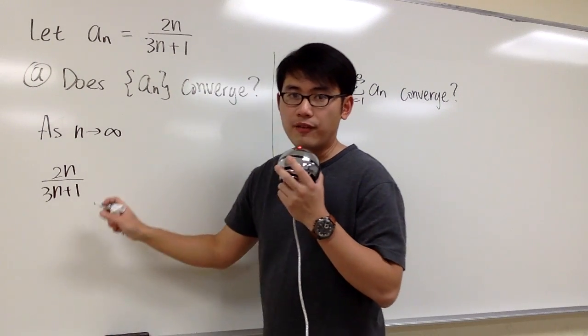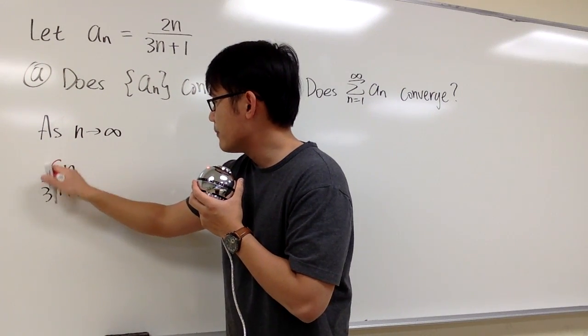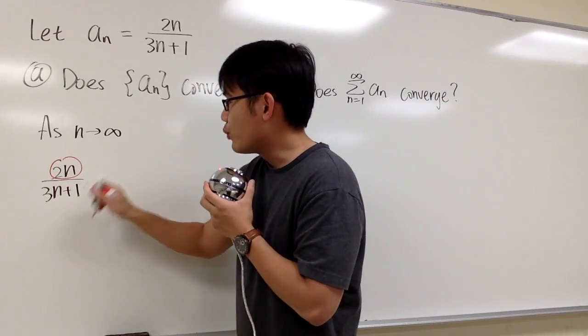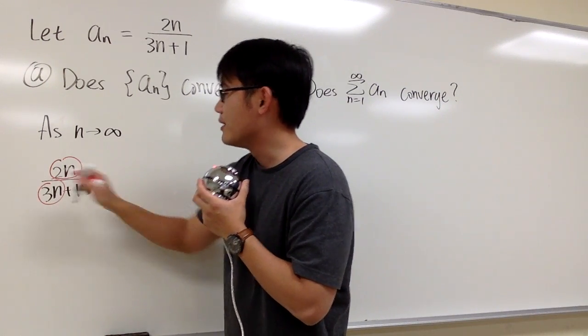And based on the form right here, all I need to do is worry about the numerator, that's just 2n, and then worry about the highest power of the denominator, so 3n.